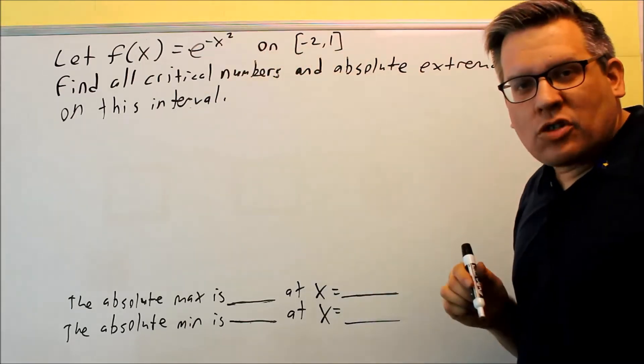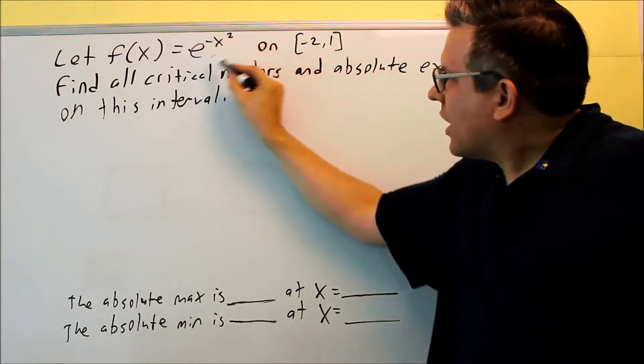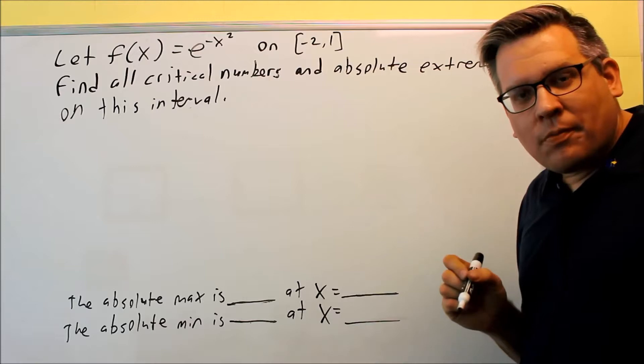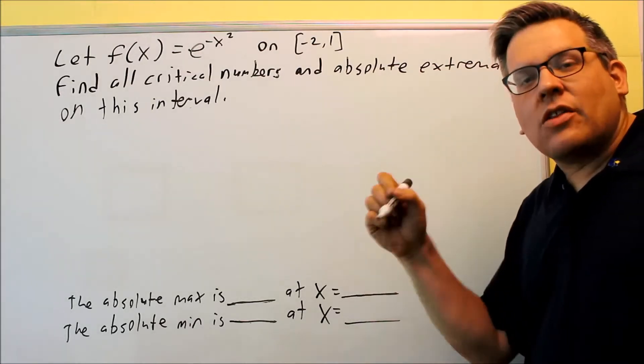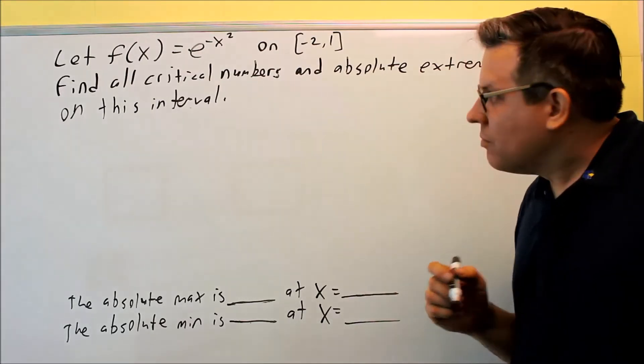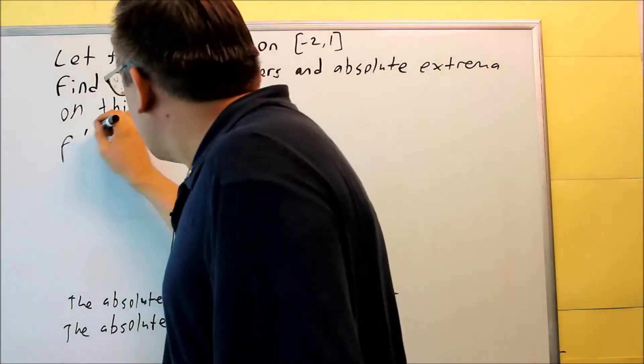Alright, so the first thing on these problems is you want to find the derivative. Now, since I have an e here, that's e to the u, the derivative of e to the u is e to the u times u-prime. So let's do that.